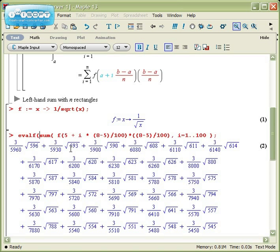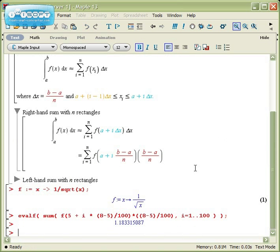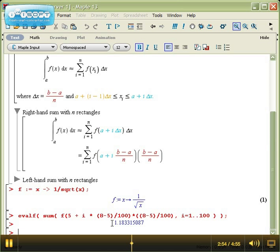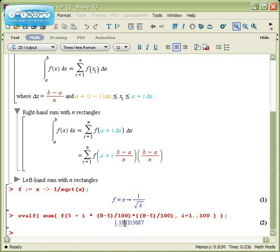So in hindsight, let me go back and put evalf around this. That's the numeric approximation command. If I run this through, I find that a right-hand estimate with 100 rectangles gives me an area of approximately 1.18 units.